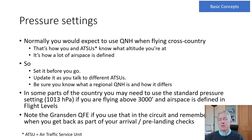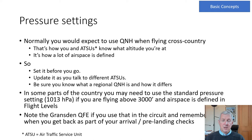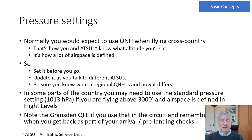We need to set QNH before we go and update it as we talk to different air traffic service units — it's probably not going to change very much, but it's a way of keeping track of the current QNH. If we're talking to military ATSUs they may give us a regional QNH, so you need to know what that is and how it differs. In some parts of the country you might need to use the standard pressure setting of 1013 hectopascals if flying above 3000 feet, where some airspace is defined in flight levels. From Cambridge, the transition altitude for most local flying is 6000 feet.